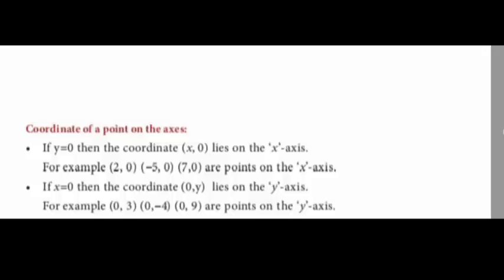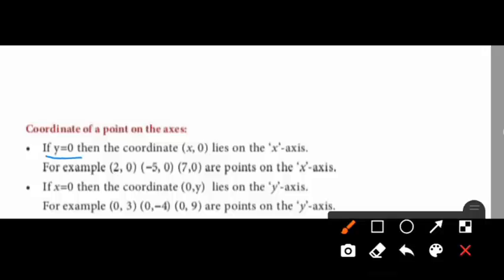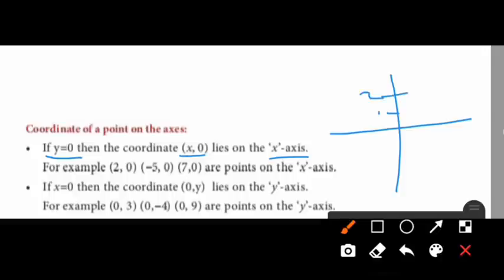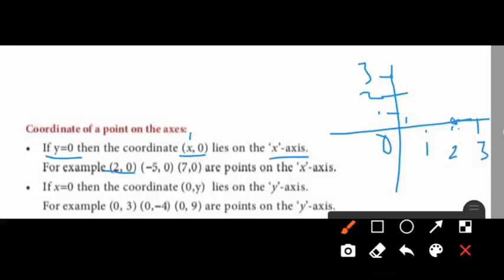Coordinate of a point on the x-axis: if y is equal to 0, then the coordinate (x, 0) lies on the x-axis. For example, (1, 0), (2, 0), (3, 0) — if y value is 0, for instance (2, 0), x is 2 and y is 0, so it intersects on the x-axis. Similarly, if x is equal to 0, then the coordinate (0, y) lies on the y-axis. For example, (0, 3) — x is 0 and y is 3, so it intersects on the y-axis.